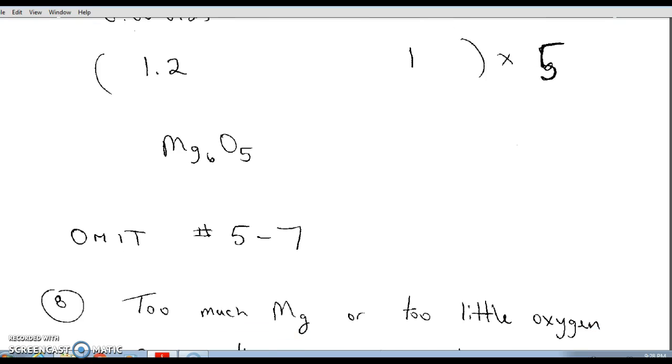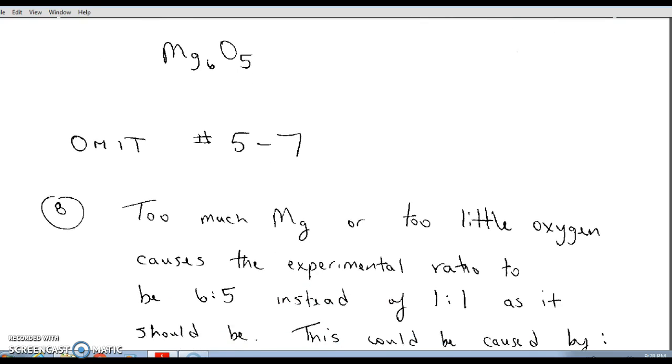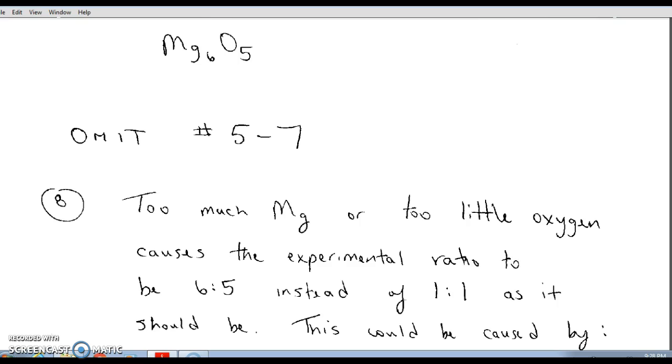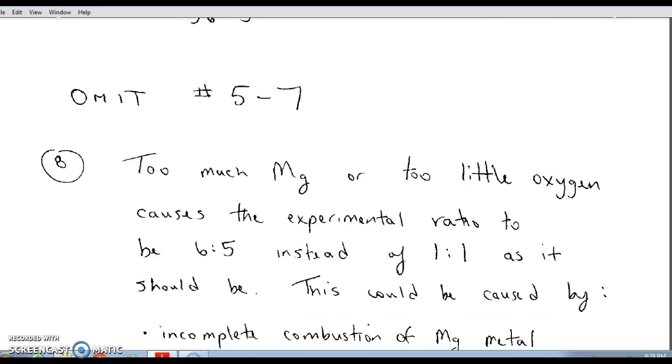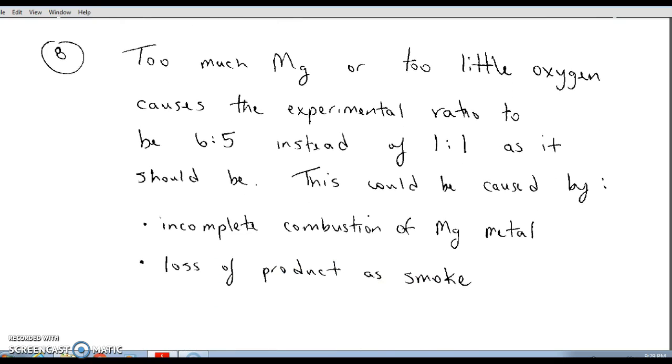Question number eight asks us to analyze the error of this experiment. Since my experimental empirical formula that I determined in number four is Mg6O5, I have a six magnesium to five oxygen ratio. But as I did in the percent composition theoretical calculation, I saw that theoretically the ratio of magnesium to oxygen should be one to one because of their charges. In my experiment I have too much magnesium or too little oxygen to make my ratio kind of unbalanced towards the magnesium side, and this is primarily caused by two factors.